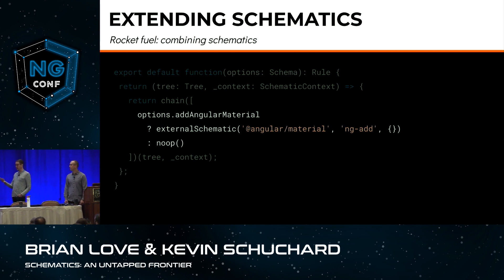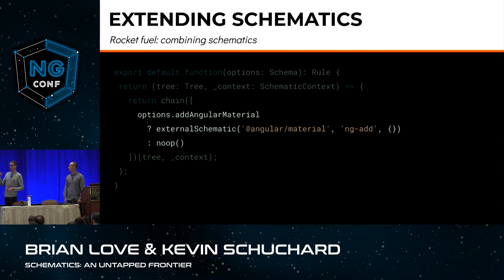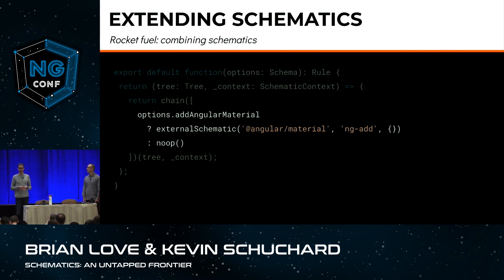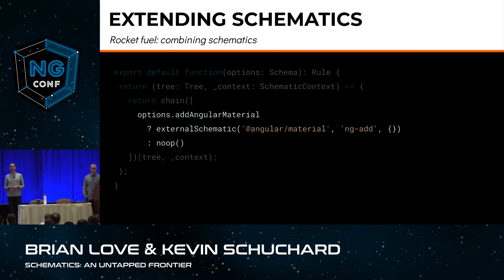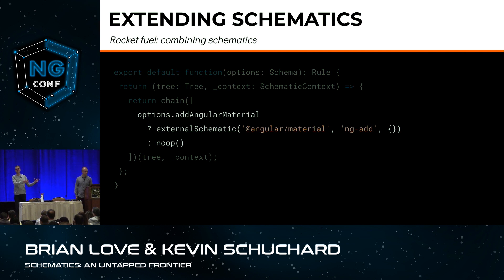Let's quickly talk about extending schematics. We've talked about adding and modifying files, but we can also use schematics to run external schematics. For example, we can use a function called externalSchematic — the first argument is the package name, so we'd say let's run Angular Material. Within that collection, we run the ng add schematic to add Angular Material into our project. The third argument is the options, just like the options you'd get prompted for on the command line. There's also a noop function — basically saying, if the user wants to install Angular Material, go ahead and do that; if they don't, just do nothing.